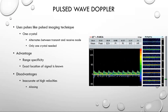Pulse wave Doppler is the Doppler used to obtain our spectral display at the bottom of a duplex image. It uses pulses like pulsed imaging technique, typically uses one crystal, and alternates between transmit and receive mode. The advantage is good range specificity — we know the depth our Doppler signal is coming from. The disadvantage is we can get aliasing with high-velocity blood flow.